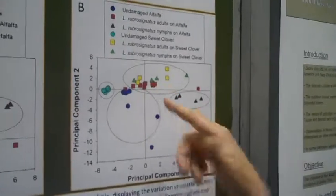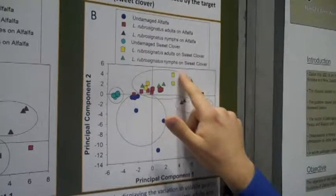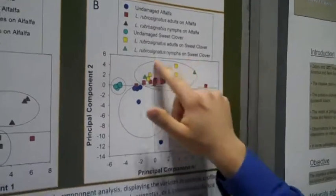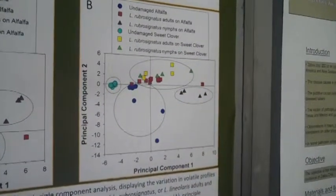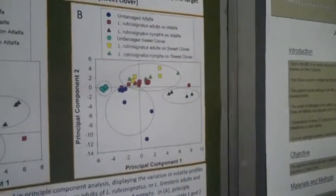Nymphs clustered together separately if they were on alfalfa or on sweet clover. This basically told me that the same life stage of the same species will cluster separately depending upon the host plant species.